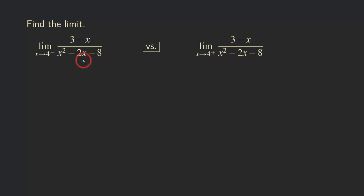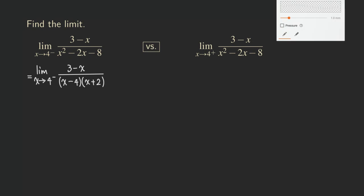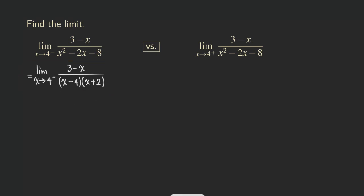So now how do we do this problem? First, we should try to factor the denominator. So I'm going to factor the denominator — just copy the top for now. If we factor the denominator, we are going to get two factors: one of them is x minus 4, and the other one is x plus 2. Quick check: we get x squared, then plus 2x minus 4x which gives negative 2x, and negative 4 times 2 is negative 8. Same thing for this problem — I'm just going to copy that to the other side.